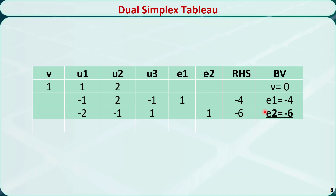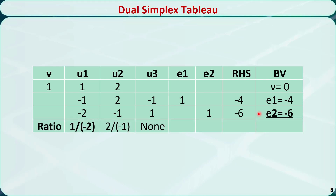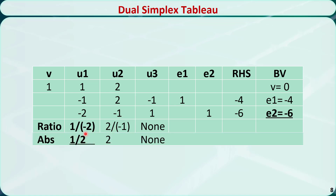We choose the most negative basic variable as the leaving variable, which is e2, and this row will be the pivot row. We compute the ratio for each non-basic variable that has a negative coefficient in the pivot row: 1 divided by negative 2 gives negative 1/2, and 2 divided by negative 1 gives negative 2. We choose the variable with the smallest absolute ratio as the entering variable, which is u1. We use EROs to make u1 have a coefficient of 1 in the pivot row and disappear in all other rows.